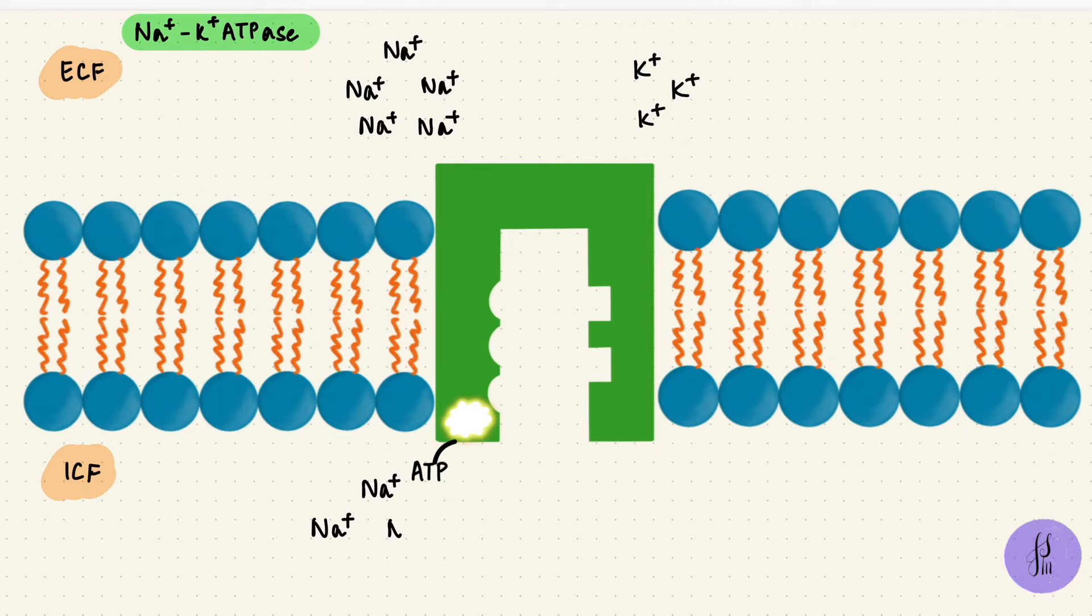Now remember when it phosphorylates, the conformation changes, from an E1 to an E2 position. In the E1 position, the binding sites face inside the cell, and they have a high affinity for sodium ions. So three sodium ions bind.